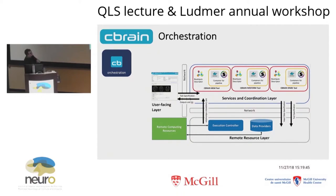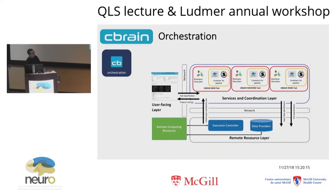Finally, the meat of what C-Brain does is orchestration — moving the data around and performing the computation. Every one of these computing resources has a different environment. No matter how much they try to homogenize them, there are so many differences between high performance computers, and cloud resources don't necessarily have common interfaces either. The orchestration layer allows us to abstract away things like queuing systems, file systems, and environment setup. Once we have a container and a Boutiques descriptor, you can essentially just tell the system 'I want to execute on my data this pipeline,' and it sends it off through the network to remote resources.